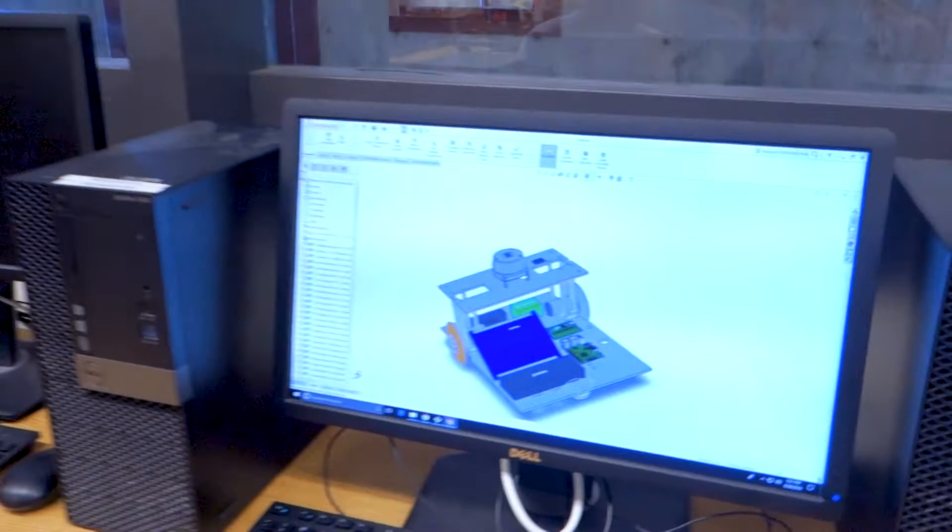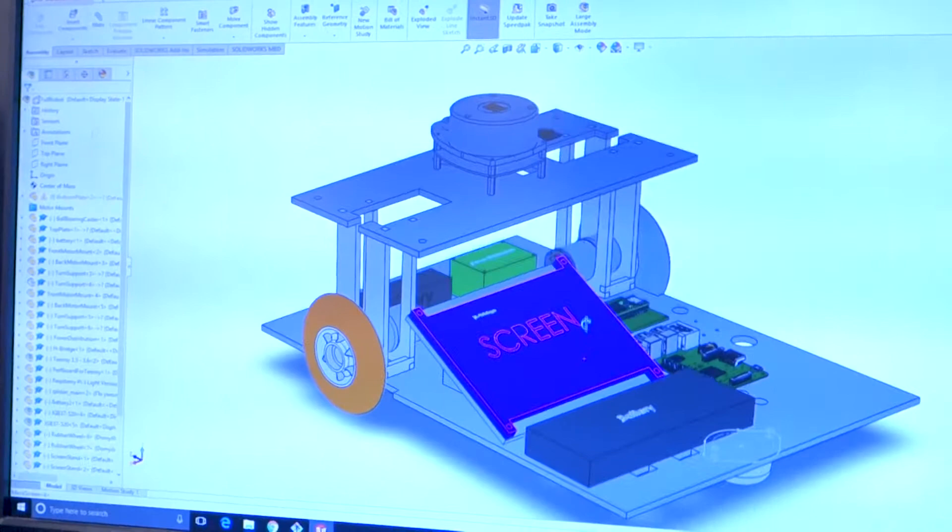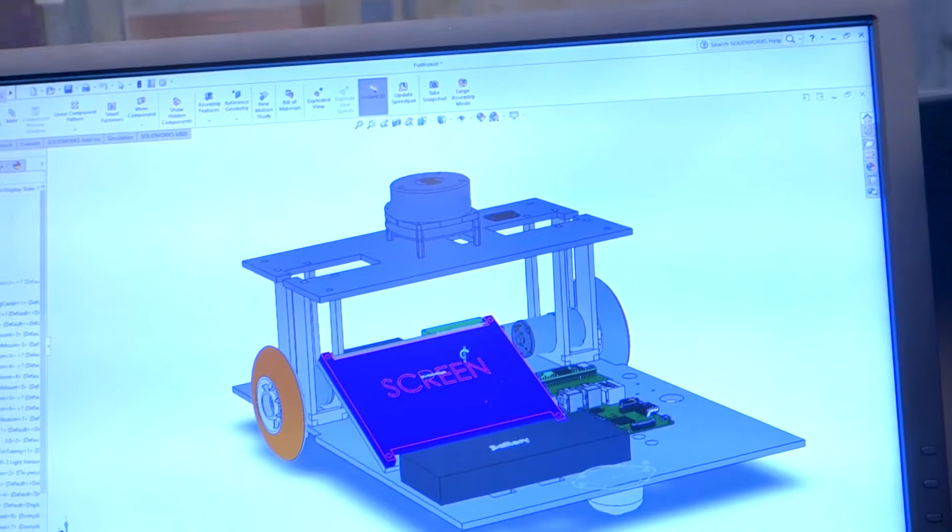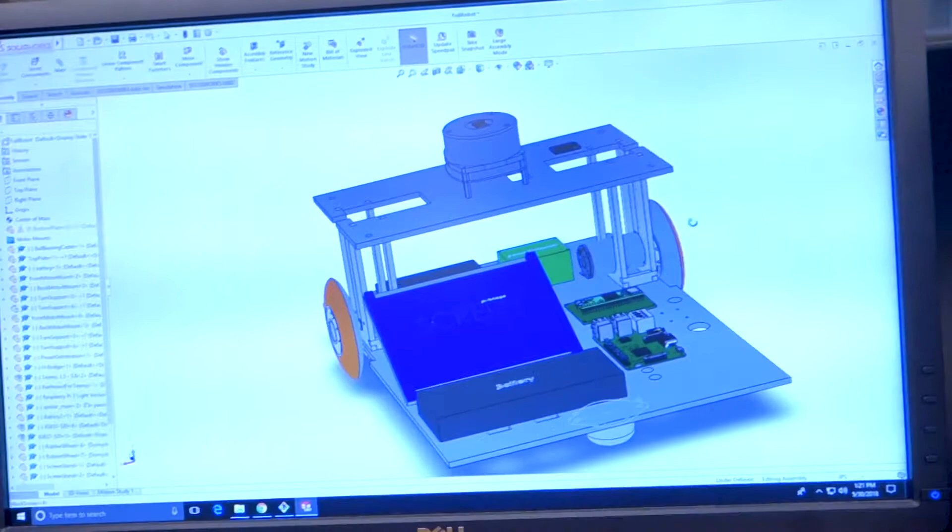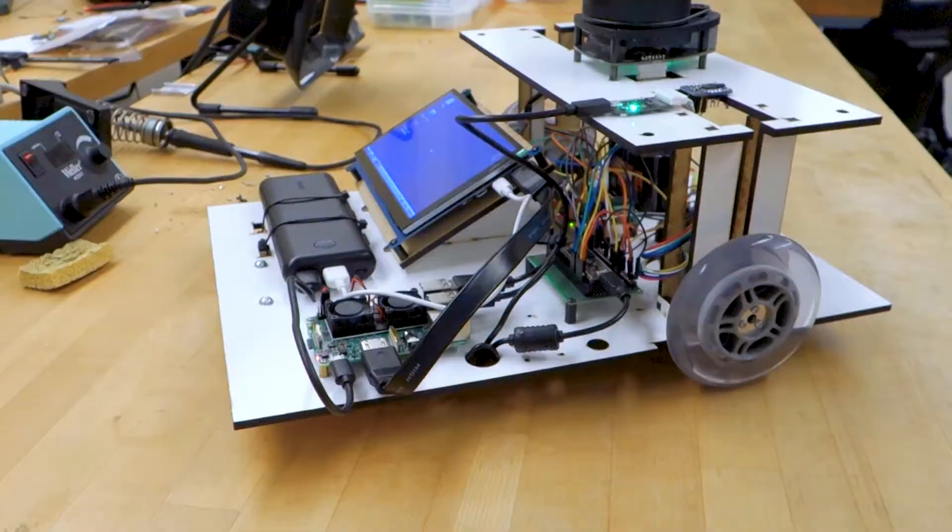To determine mechanical feasibility we used SolidWorks. Shown here is our SolidWorks design. Shown here is our robotic frame which was manufactured from MDF material using a laser cutter.